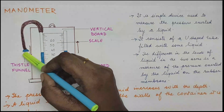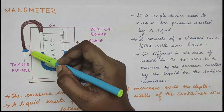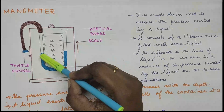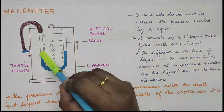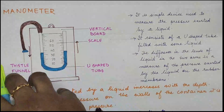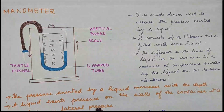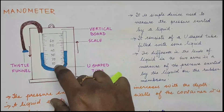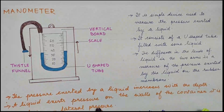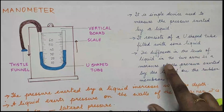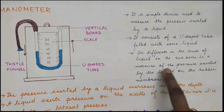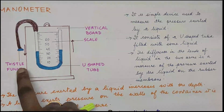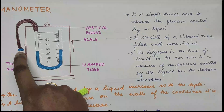When you put this thistle funnel inside the liquid whose pressure you want to find, you will see that the two levels in the U-tube change. Initially both levels should be equal, but as you go deeper inside the liquid with the thistle funnel, the level of the water or mercury inside the tube will change. The difference in the levels of liquid in the two arms is the measure of the pressure exerted by the liquid on the rubber membrane attached to the thistle funnel.